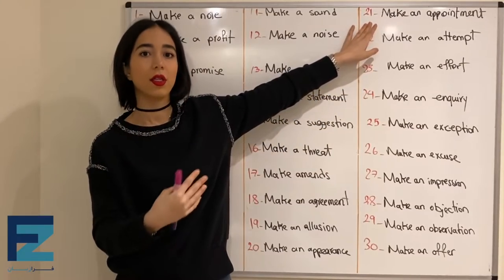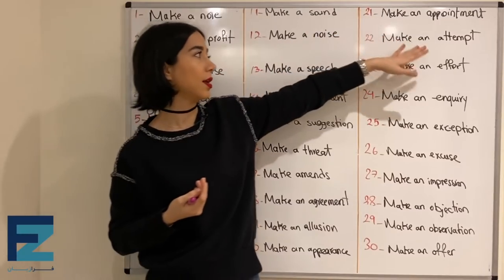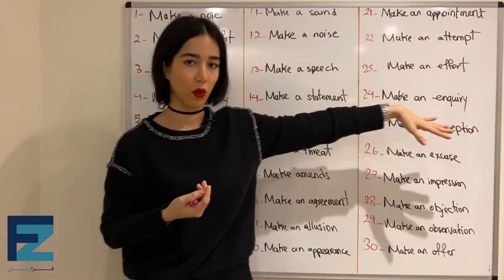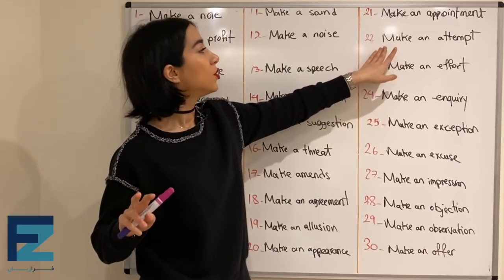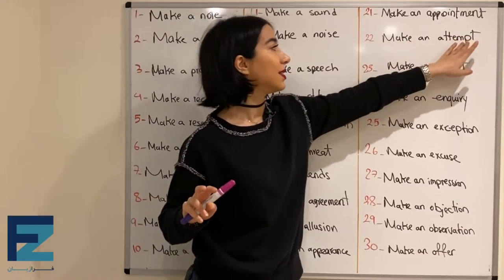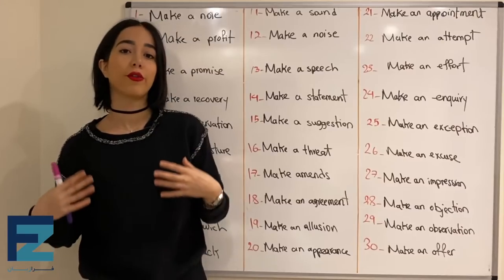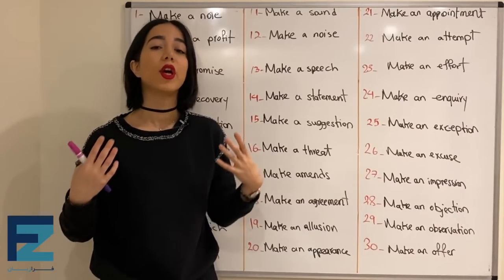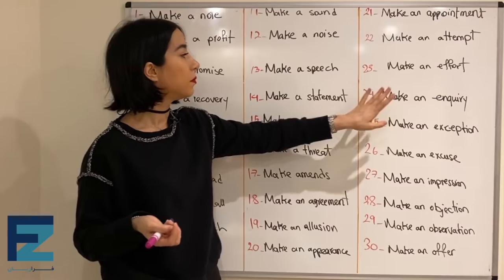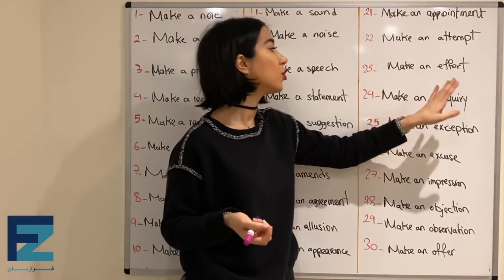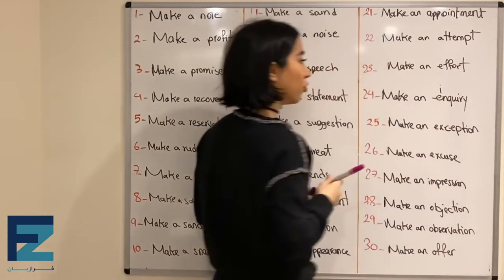مثلاً دکتور که میخواییم برین make an appointment میکنی. Numbers twenty-two and twenty-three are synonyms: make an attempt and make an effort — both mean to try so hard for something.